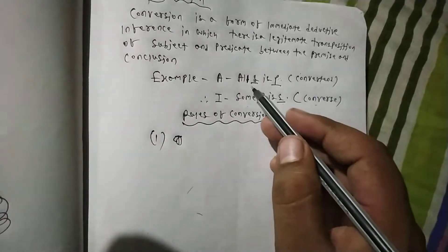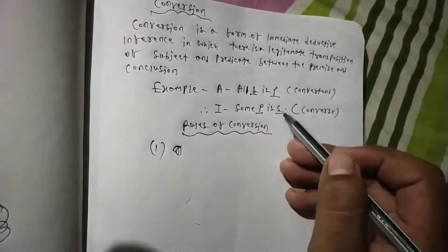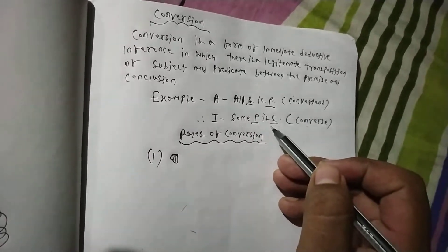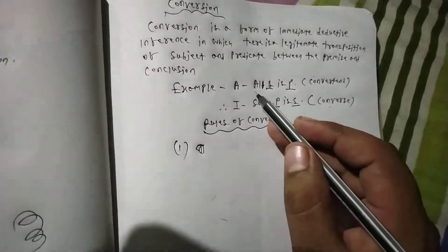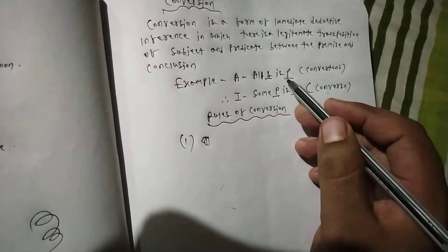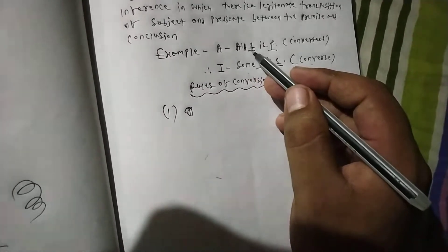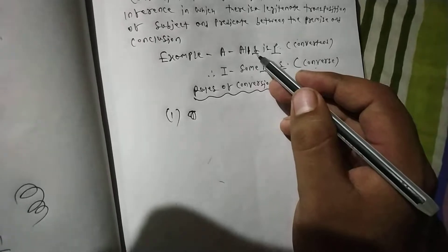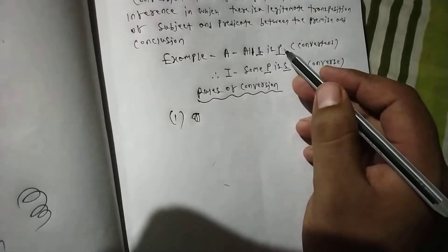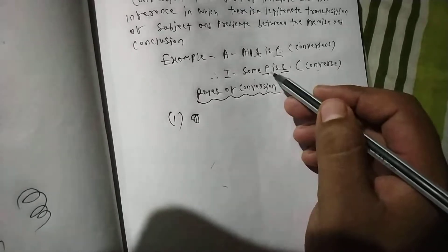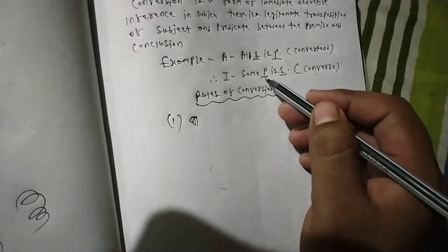For example, in all S is P, the S term is distributed as the subject of a universal proposition, but P term is not distributed in the convertend. So the P term cannot be distributed in the converse — hence the converse is an I proposition.